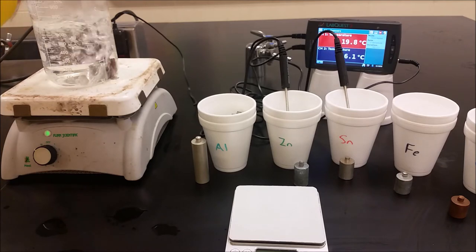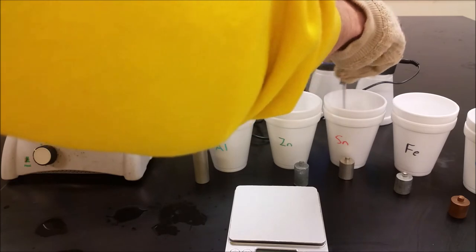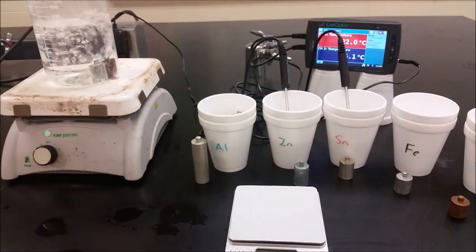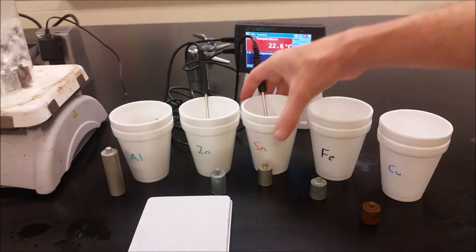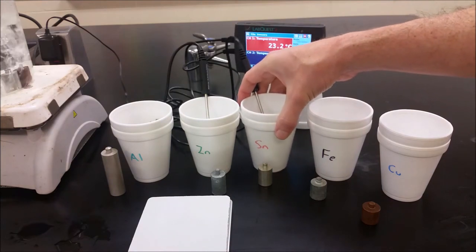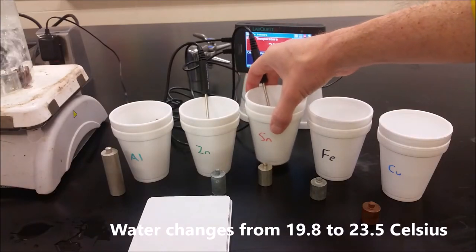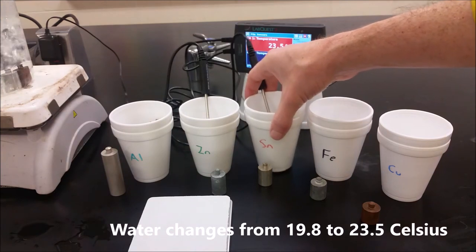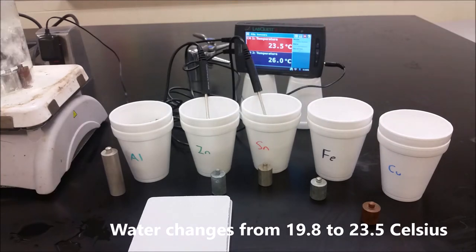All right, so next, we're going to go ahead and grab the tin here. So for our tin, we're starting at 19.8 again. We're back on temperature sensor one. From 19.8, we're not going up that much for tin as we were for aluminum, which is also interesting. Here it looks like we're going up to about 23.5.